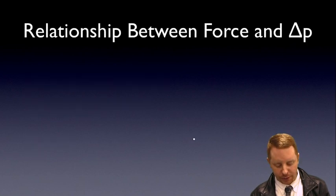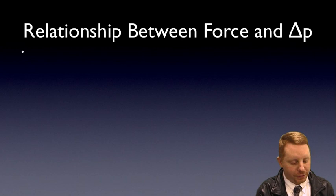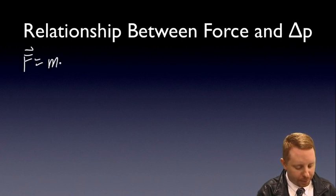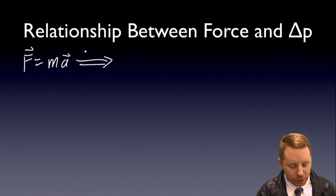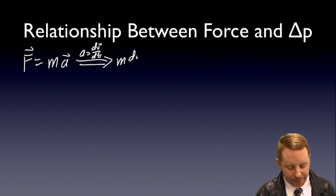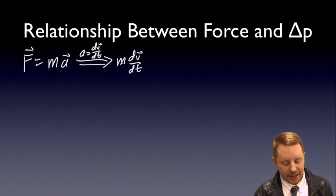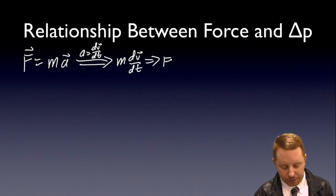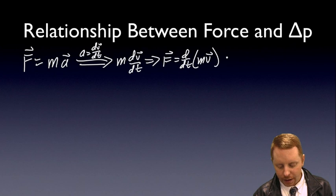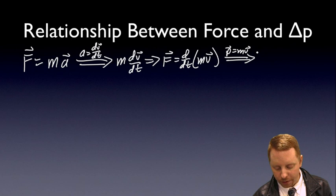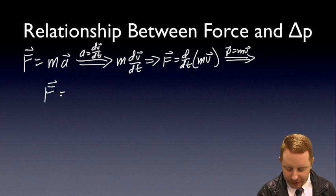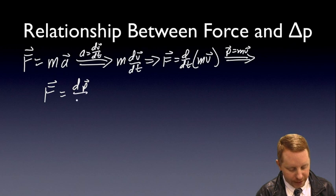Let's talk about the relationship between force and change in momentum. If we start with Newton's second law, net force is equal to mass times acceleration. We also know that acceleration is the derivative of velocity with respect to time, so I could write this as m dv dt. And since mass is a constant in this situation, I can slide that inside the derivative. Therefore, force equals the derivative with respect to time of mv. But we also know that momentum is mv. Therefore, I could rewrite this as force is equal to the derivative of momentum with respect to time.